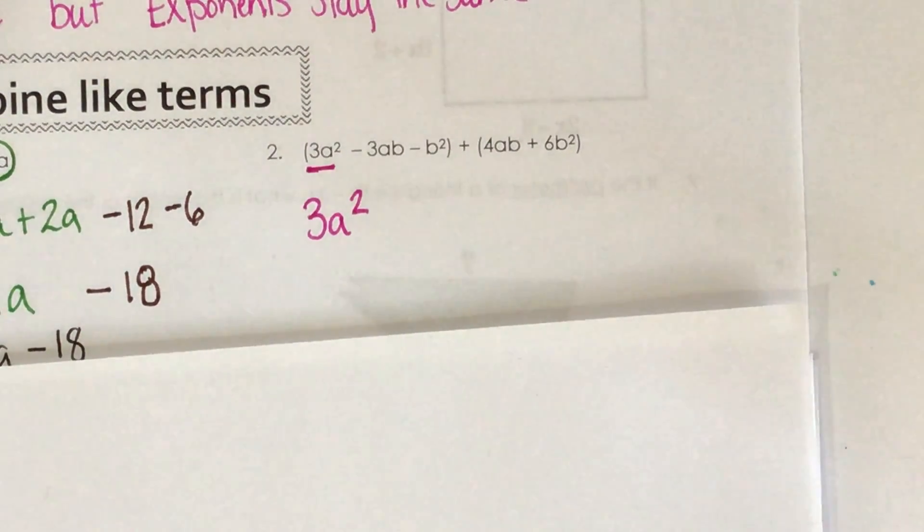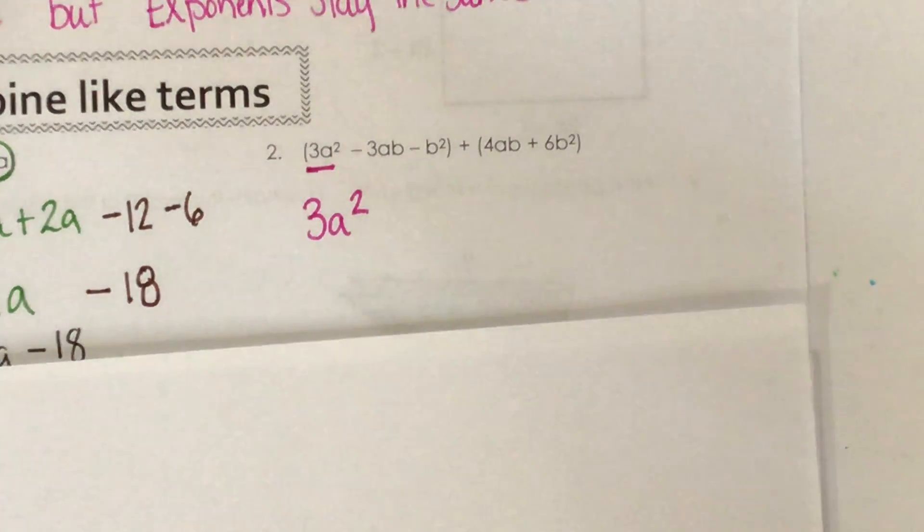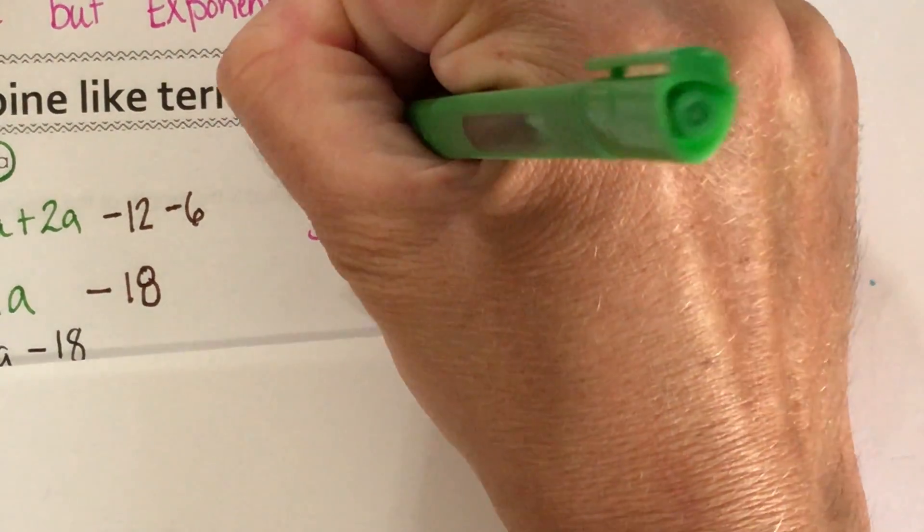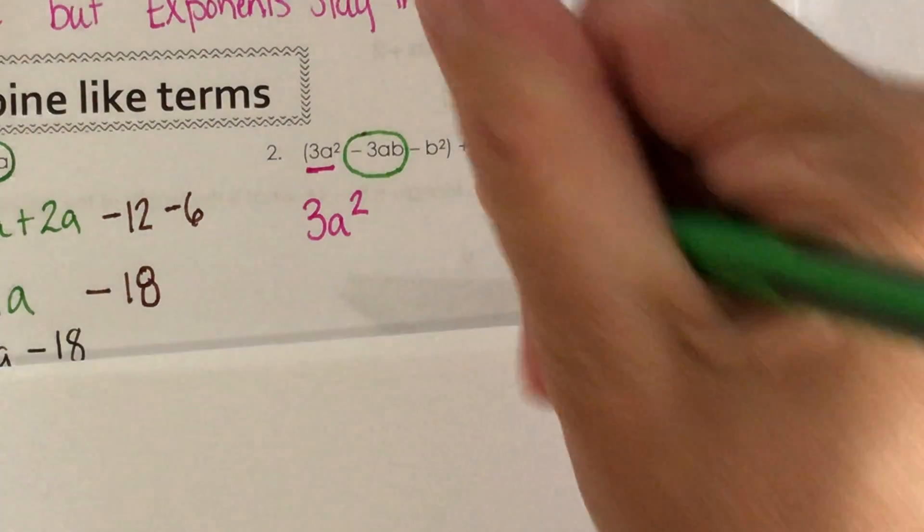So the next, I might go to my a's. So I have a 3ab. I'm sorry, it's a negative 3ab. Do I have any other a's? And yes, I do.